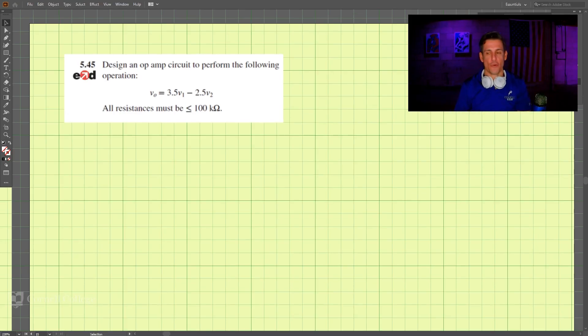This is problem 545 and we're looking here to design an op-amp circuit. We're looking to design an op-amp circuit to perform the following operation: v_out = 3.5*v1 - 2.5*v2. All resistances must be less than 100 kiloohms, so no resistors bigger than 100 kiloohms.